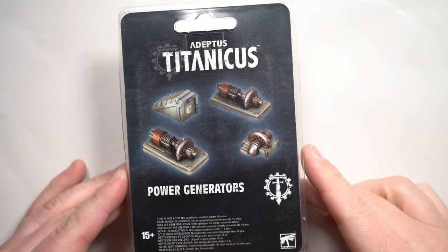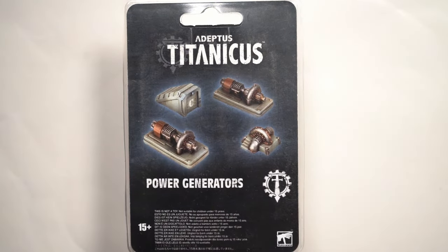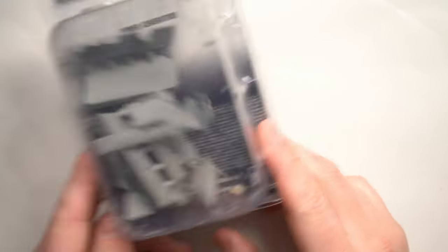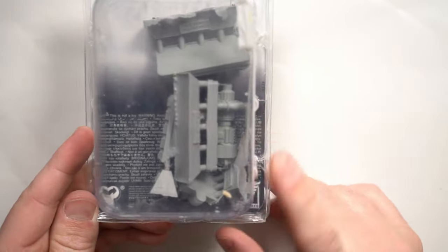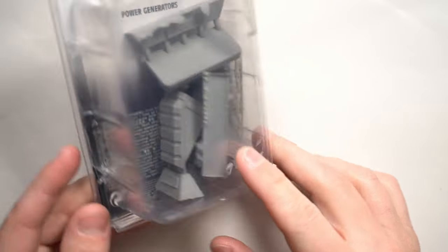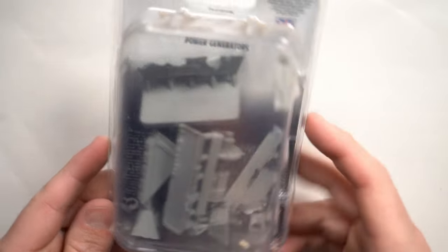Here is the Adeptus Titanicus Power Generator set from Forgeworld and because it's from Forgeworld it is most likely going to be made of resin so you're going to want to be using water when sanding or sawing any parts of the resin model. Please be careful, it's not like plastic.